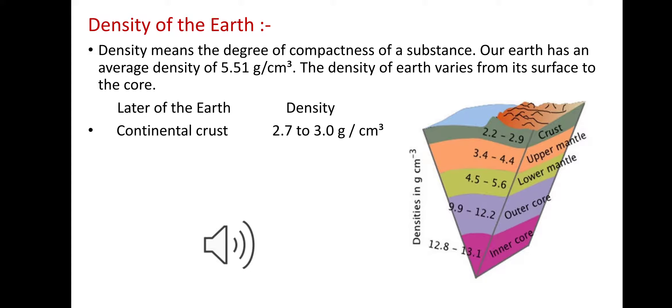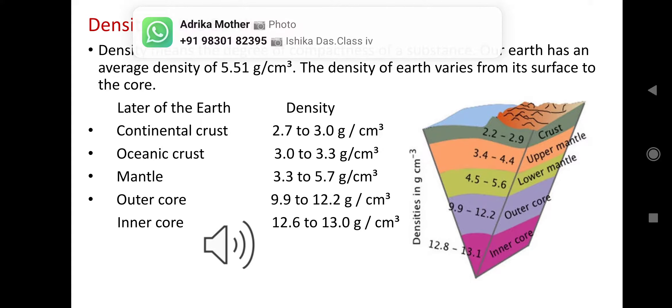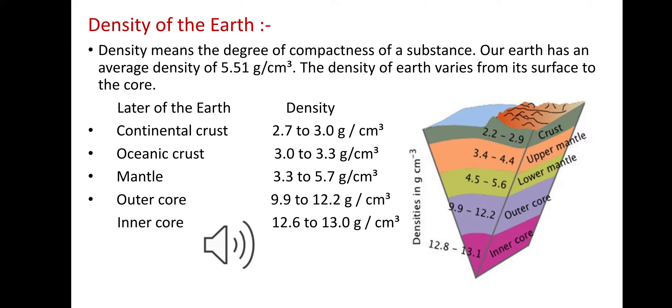Here I've given you a table of the layers of the Earth and their density. The continental crust density is 2.7 to 3.0 grams per centimeter cubed, oceanic crust is 3.0 to 3.3, mantle is 3.3 to 5.7, outer core is 9.9 to 12.2, inner core is 12.6 to 13.0. The layer with maximum density is the inner core.